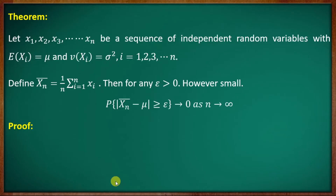Let x1, x2, ..., xn be a sequence of independent random variables with E(xi) equal to mu and V(xi) equal to sigma squared, for i equal to 1, 2, 3, ..., n. Define x-bar-n equal to 1/n times summation i equal to 1 to n of xi.